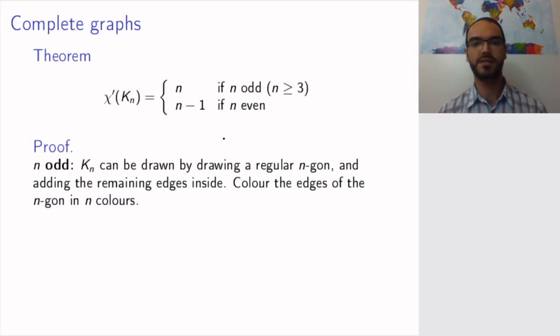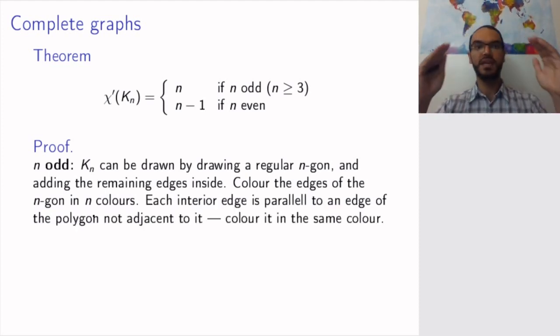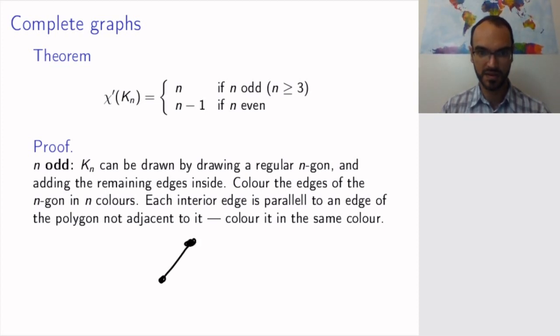Well since we have n colors we can use our n colors to color the edges of the n-gon. And then as it turns out for odd complete graphs when you draw the n-gon as regularly, meaning that all angles are equal, this has no graph theoretic consequence, but for the drawing it will turn out that each interior edge will be parallel to an edge of the polygon that's not adjacent to it. So let me try to illustrate this even though I am not a great artist when it comes to regular n-gons.